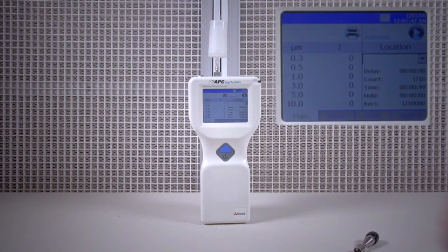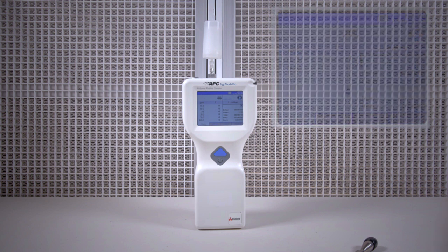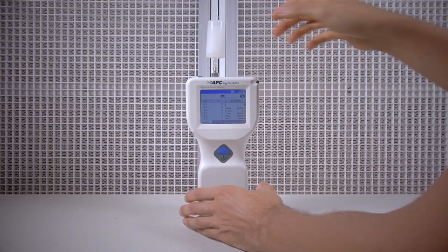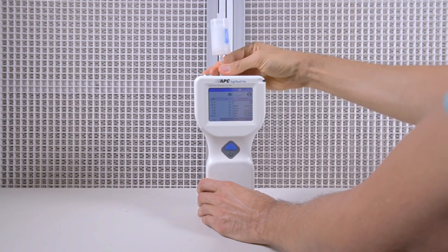As you can see, there's nothing showing up on the particle size chart to the left of the screen. This verifies that there are no leaks or issues with our counter, and it is functioning properly. Let's place the standard attachment back on. Now that we're ready, we're going to take an ambient reading of our room.